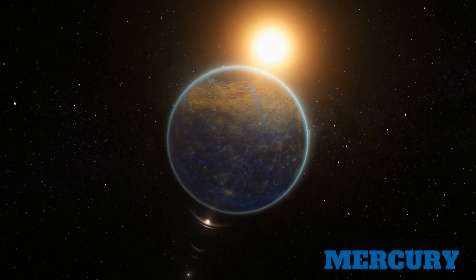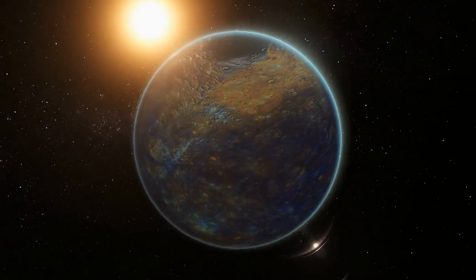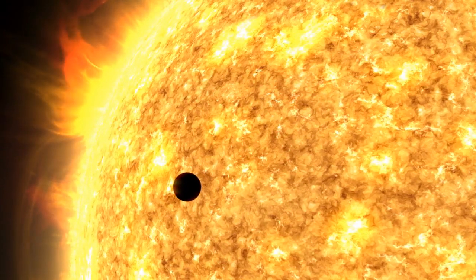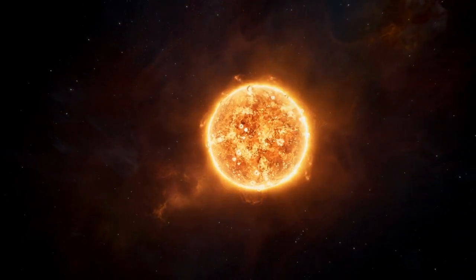Mercury, the closest planet to the Sun, is the smallest planet in our solar system, only slightly larger than Earth's moon. From the surface of Mercury, the Sun would appear more than three times as large as it does when viewed from Earth.